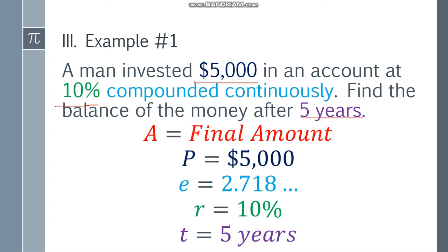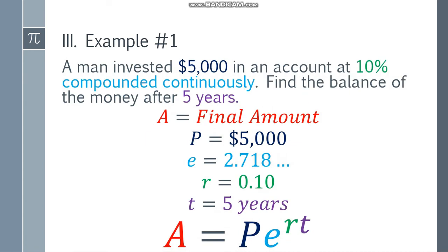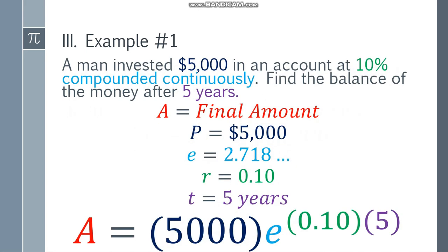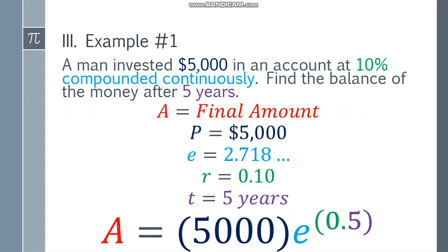So you have to change the rate to decimal first. That will be 0.10. Divide 10 by 100 to convert from percent. Now, use the formula. We have A equals P times E to the rt. To get the final amount, substitute the values. We have A equals 5,000 multiply by E to the power of 0.10 times 5. This is the exponent. So simplify the exponent first. That will be 0.5.